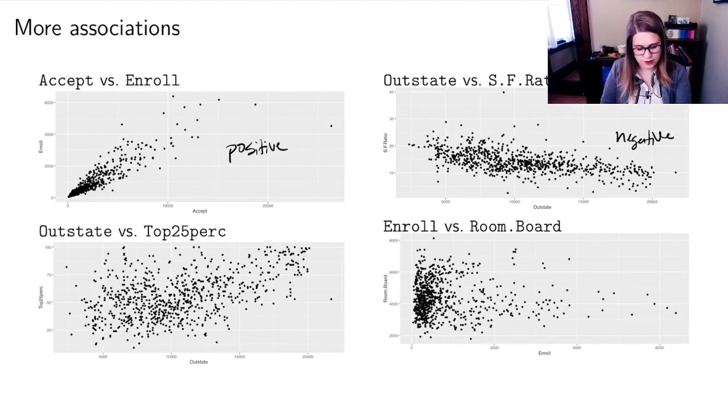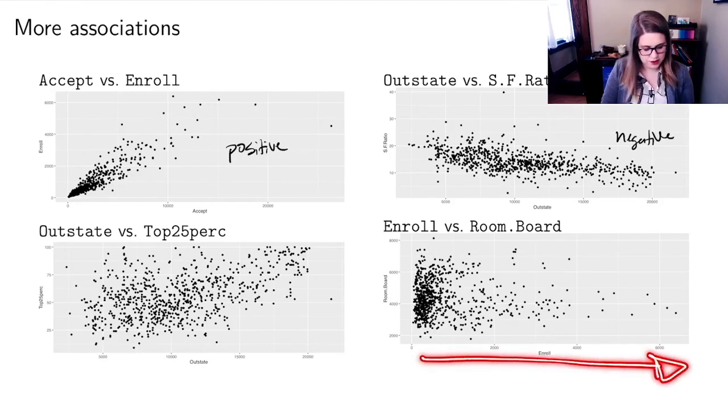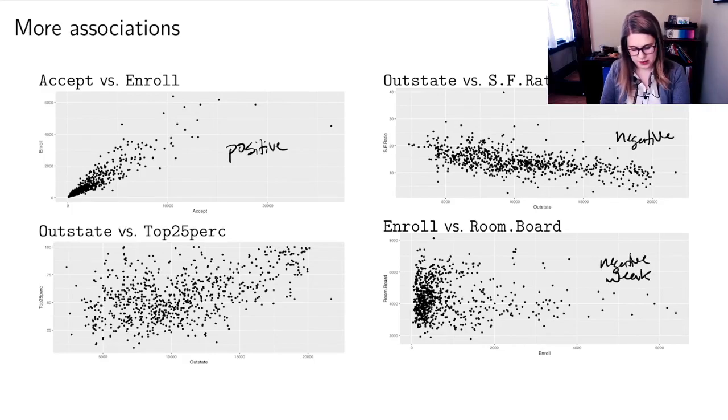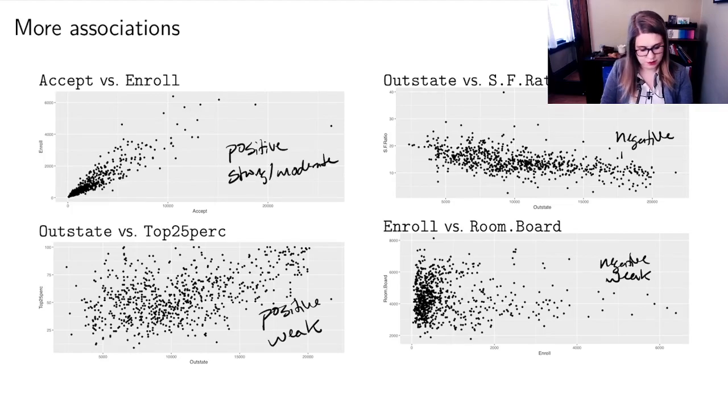The enrollment versus room and board: as the number of students at the university goes up, it looks like the room and board price maybe goes down a little bit. But it's not very strong, so I would say this one is negative and weak. The out-of-state versus top 25 percent, I can sort of see a positive trend, but again, this is positive and weak.